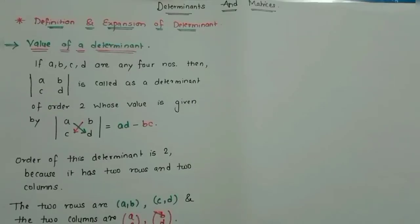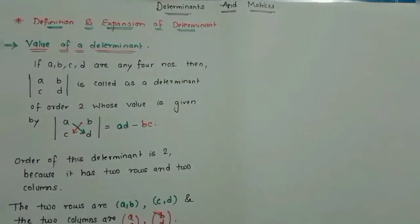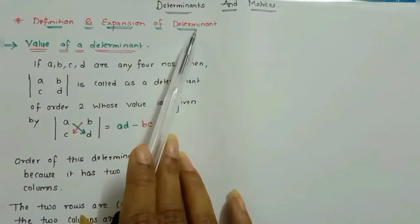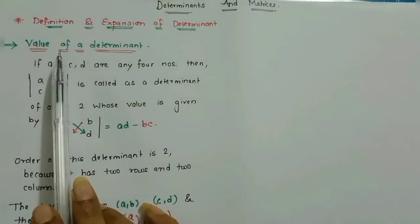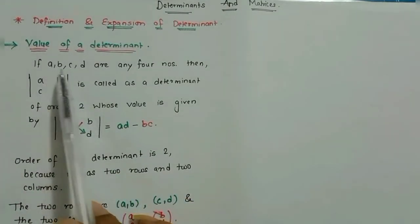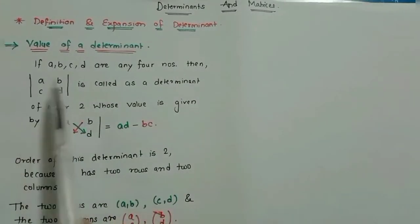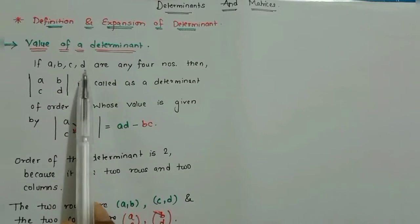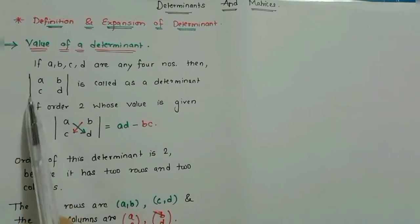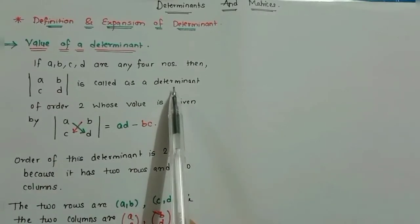Hello everyone. Let's start with the 11th standard, fourth topic of maths: determinants and matrices. Now let's see the exact definition and expansion of the determinant. If we need to find the value of any determinant, let us consider four terms a, b, c, d. We can enclose these elements in two vertical lines — that representation is the determinant.